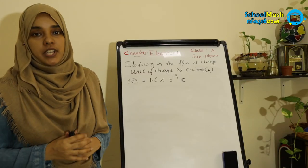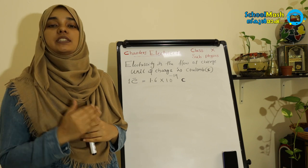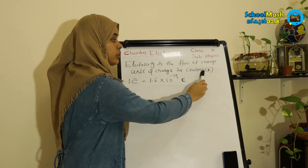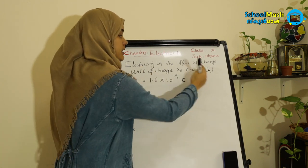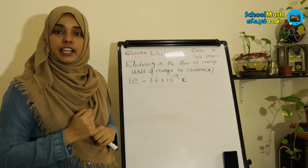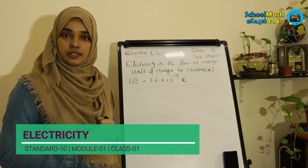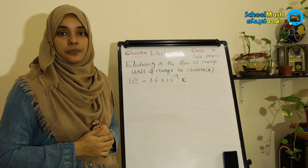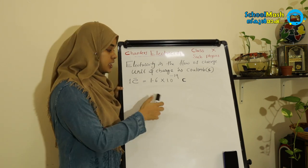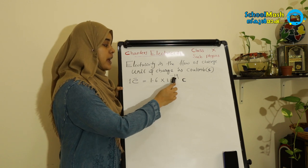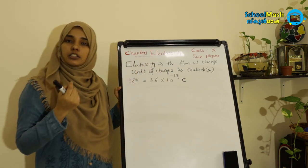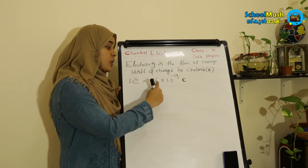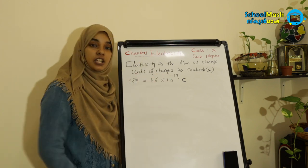Now let's talk about the charge. The unit of charge is coulomb, denoted by C. The flow of electrons carries this charge. The charge of one electron is 1.6 × 10⁻¹⁹ coulomb. There are so many electrons — each one is a very small particle.